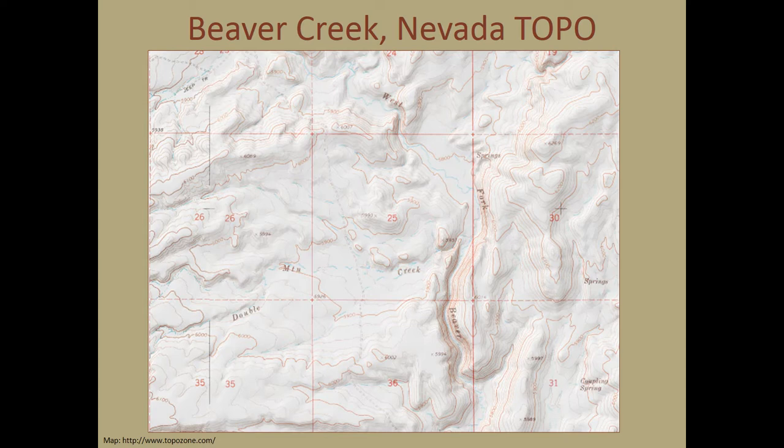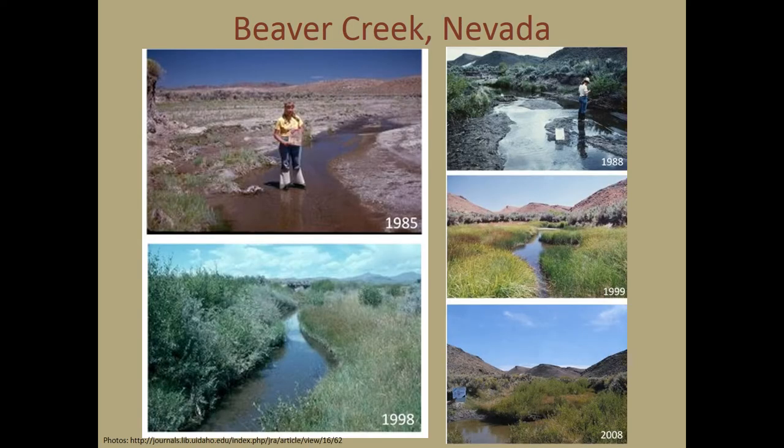Another remarkable recovery story was documented on Nevada's Beaver Creek. The west fork of Beaver Creek at this location is shown on USGS topo maps as a small perennial stream — see the solid blue line. However, in 1985 it had become almost seasonal in its flow regime. The continuous grazing of cattle and sheep was identified as a hindrance. Management changes were made and recovery began to occur. By 1988, lots of colonizer plants — though not necessarily preferable ones — had taken hold. Ten years later, the creek was storing water like a sponge and its perennial flow had returned.